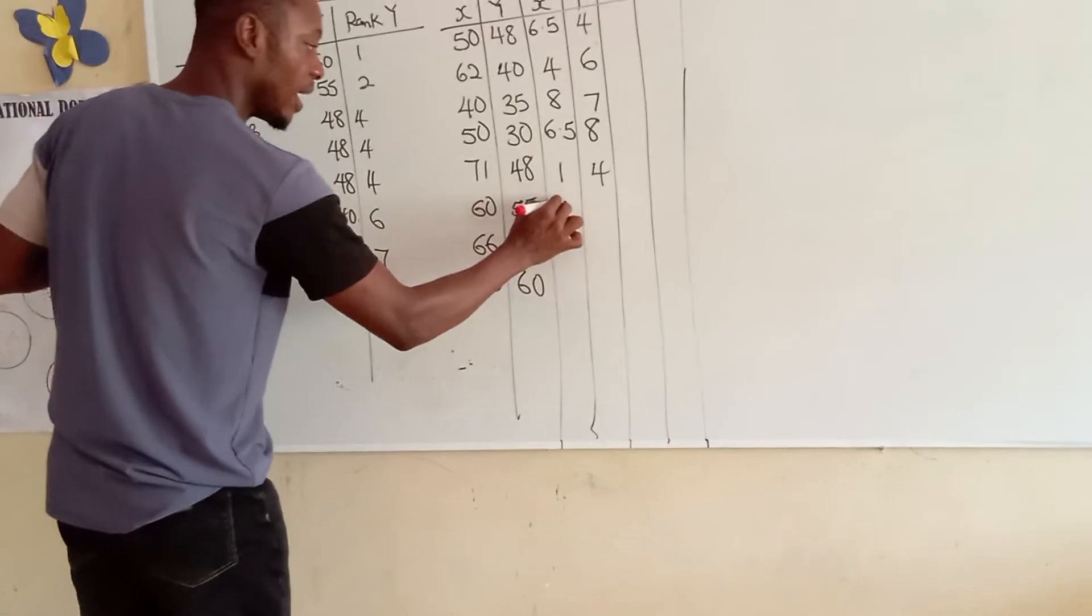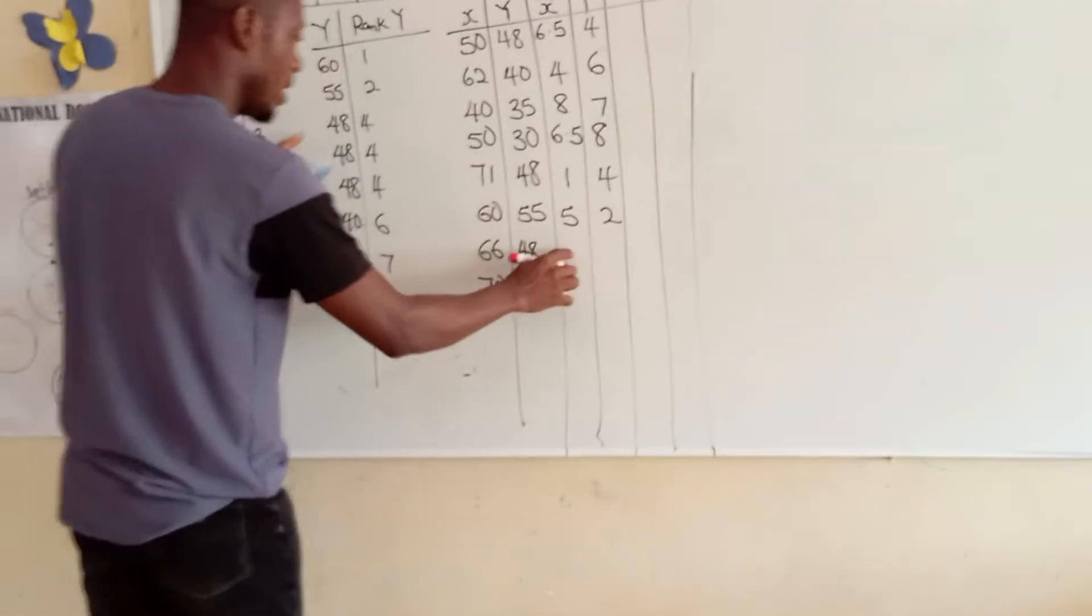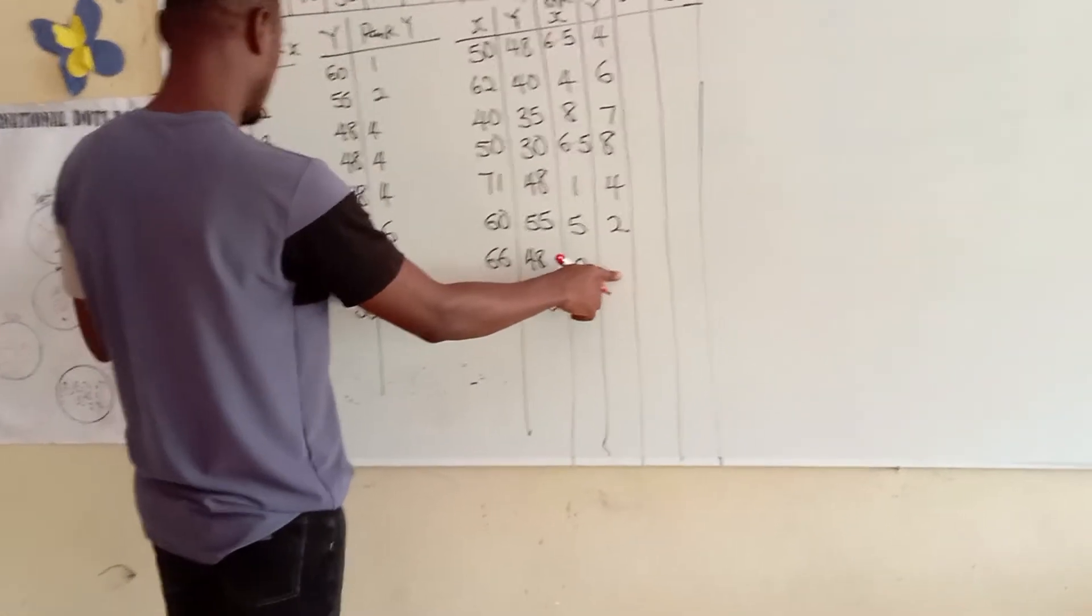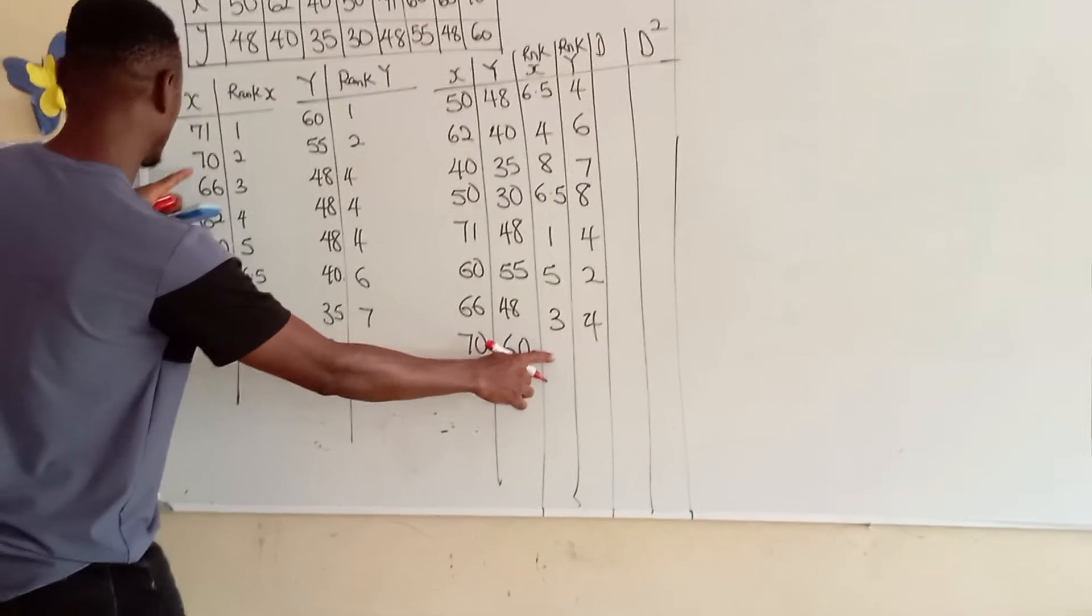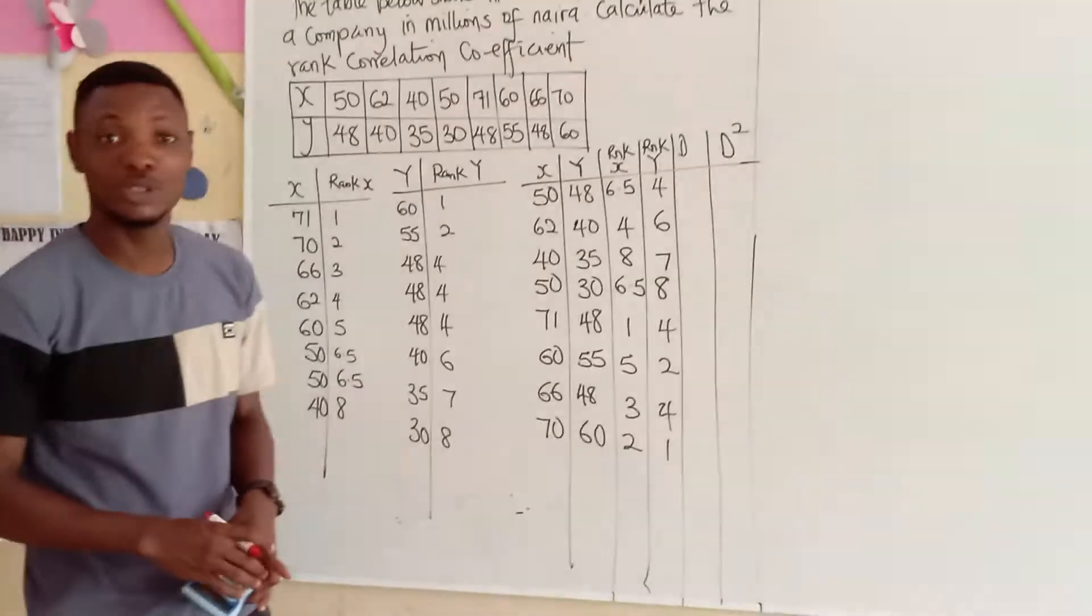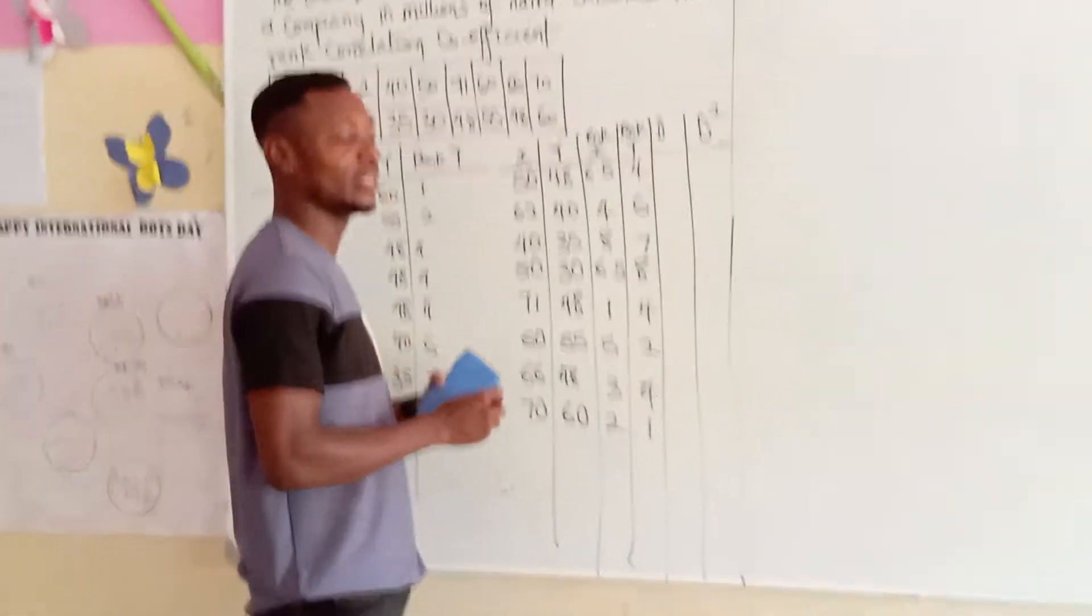Then, X, 71 is 1. Y, 48 is 4. X, 60, it's 5. Y, 55, it's 2. X, 66, 66 is 3. Y, 48, 48 is 4. X, 70 is rank 2. Y, 60 is rank 1. Now, we've arranged them according to their rank. Now, the next thing we are going to do is to find the difference.